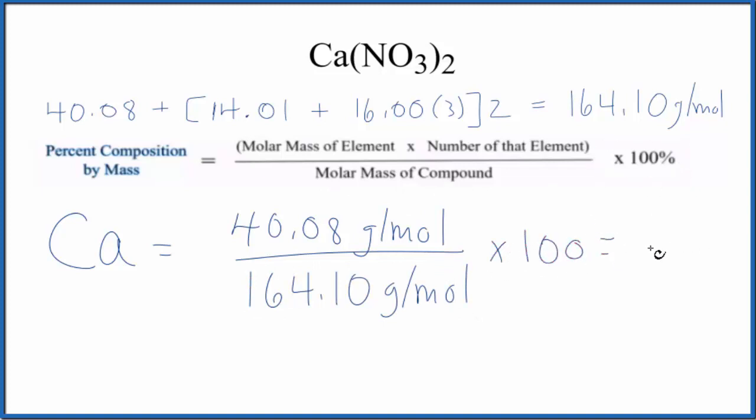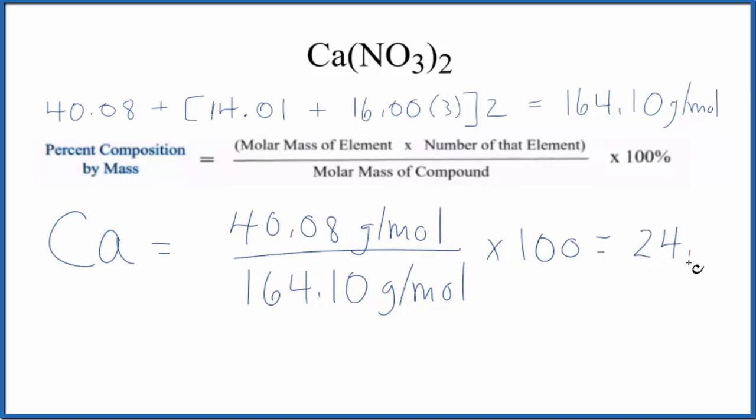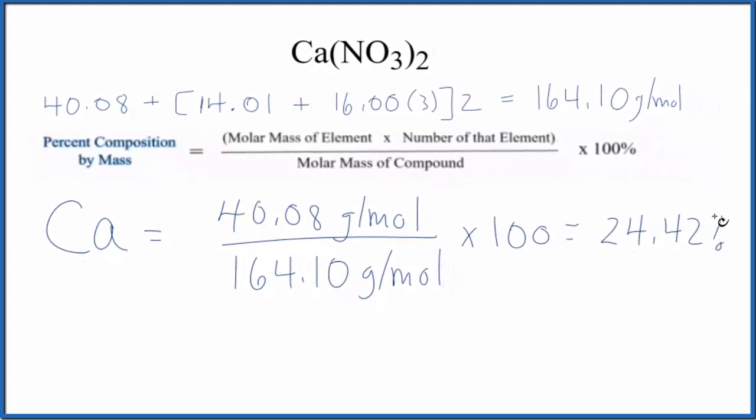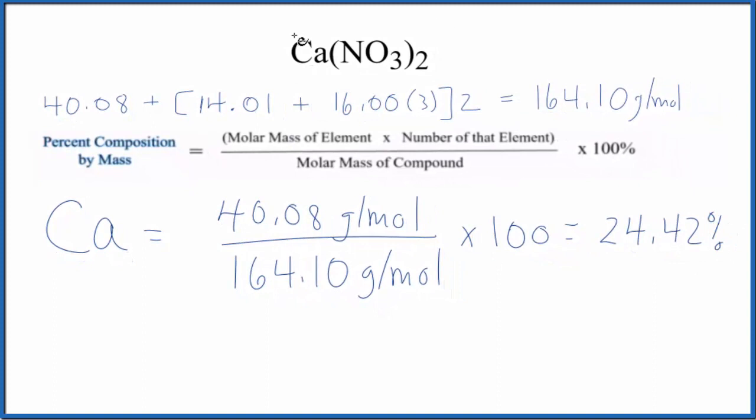We end up with calcium being 24.42%. So if we had a mass of this compound, 24.42% of that by mass would be calcium.